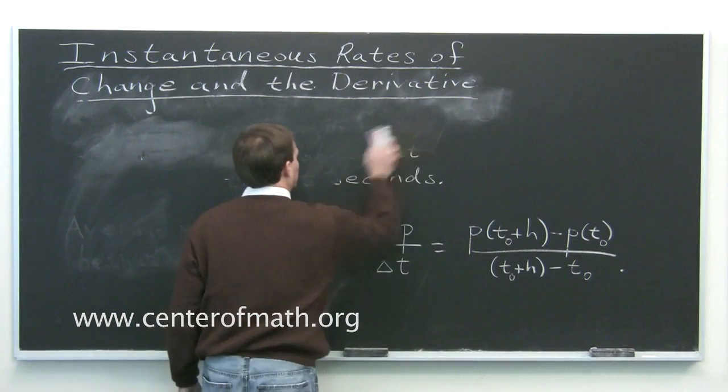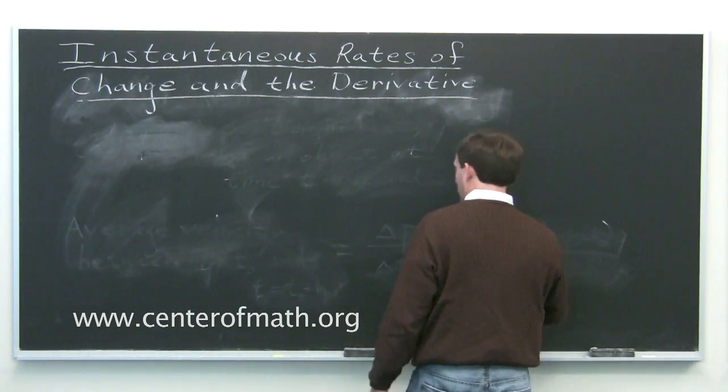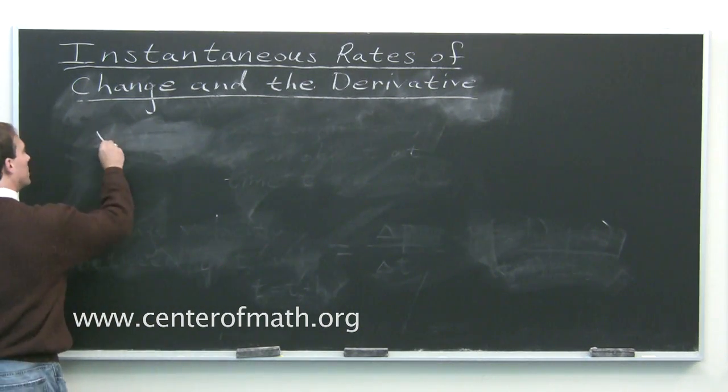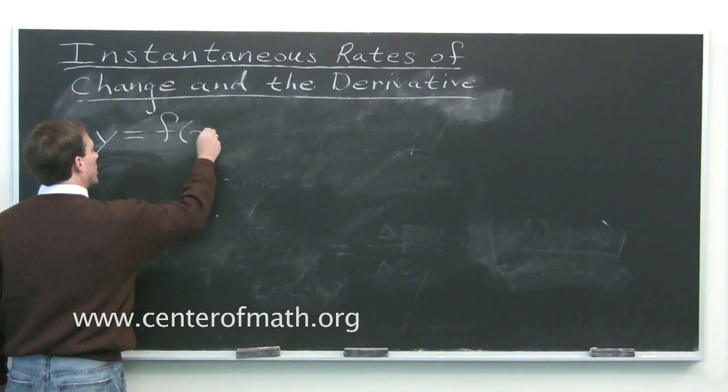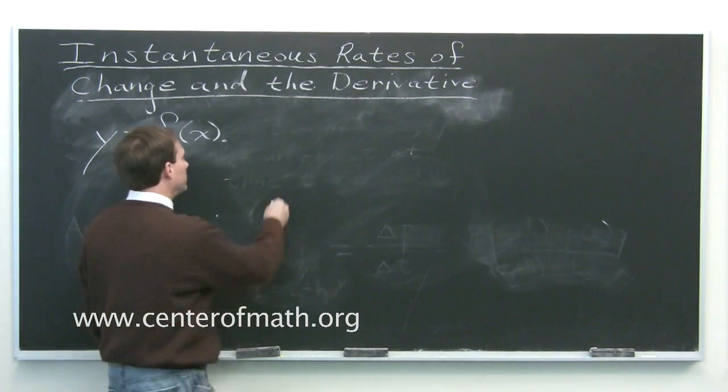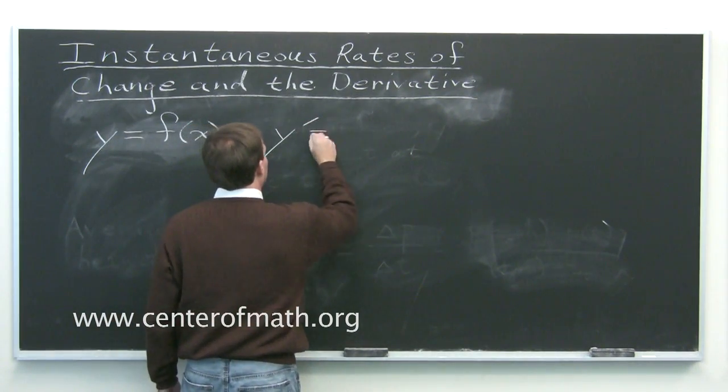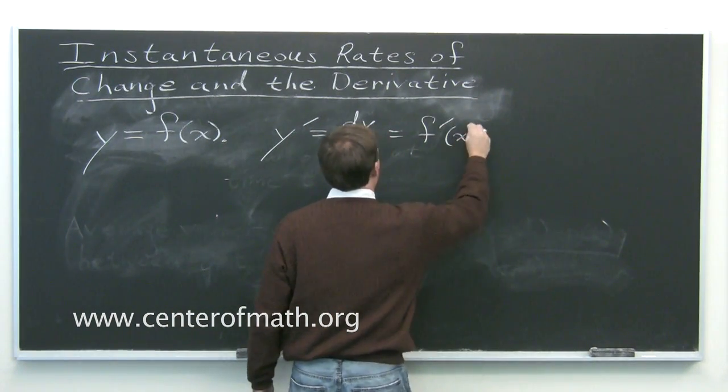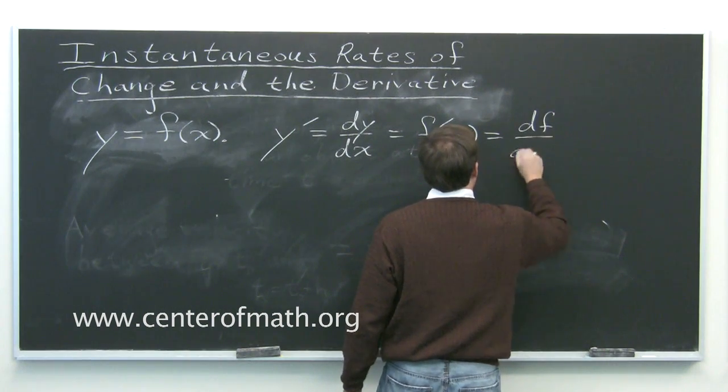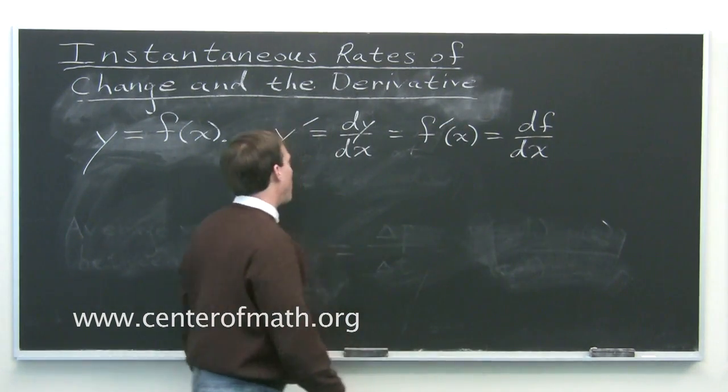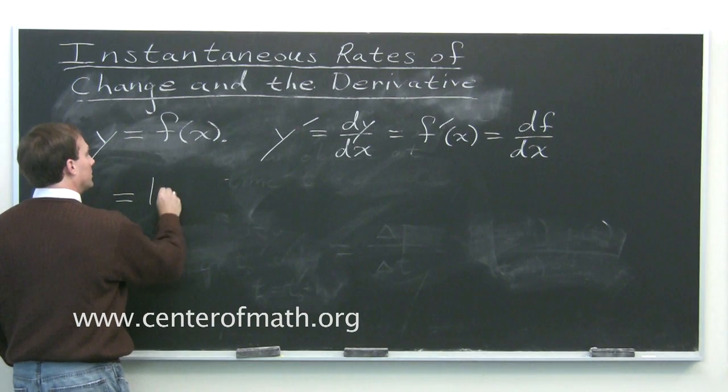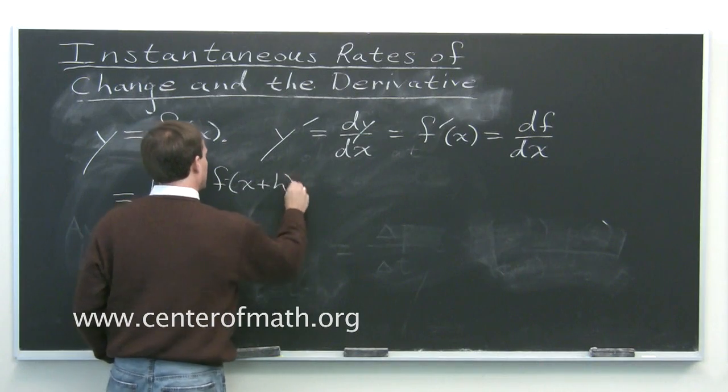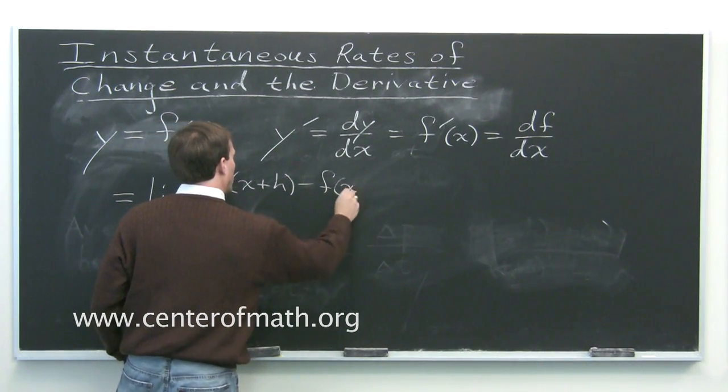Graphically, how do you picture the derivative, this instantaneous rate of change? And what do you do for functions other than position? Well, mathematically, you do the same thing. Suppose you've got any function, y equals f(x). You define the derivative, y′, dy/dx, all these notations, f′(x). People also write df/dx. There's a large number of notations that all mean the same thing. They all mean the limit as h approaches zero of f(x + h) minus f(x) over h.